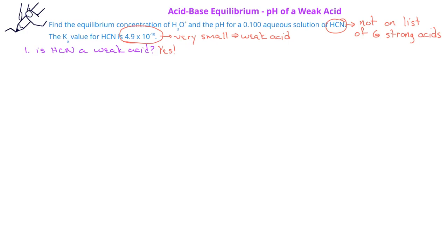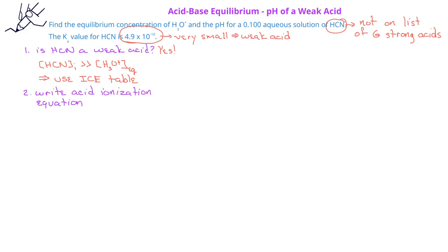Because HCN is a weak acid, the initial concentration of HCN is not going to be the same as the equilibrium concentration of the hydronium ion. Therefore, in order to answer this problem, we'll need to use an ICE table. We'll begin by writing the acid dissociation equation: HCN (aq) + H₂O (l) is in equilibrium with the hydronium ion (aq) and the cyanide ion (aq).